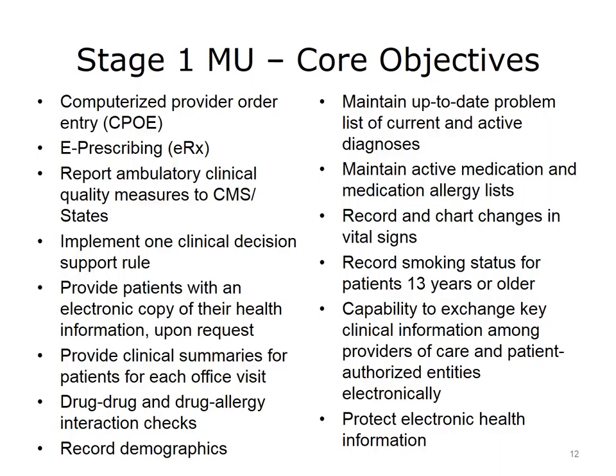This slide shows the original core objectives for Stage 1 of Meaningful Use. These include recording demographics, problem lists, medication lists, and allergy lists; providing clinical summaries; using computerized provider order entry, or CPOE, to a certain level; implementing clinical decision support; carrying out a security risk analysis; and reporting clinical quality measures. This was what the early Meaningful Use program participants had to achieve to get their first payments under the HITECH Act.